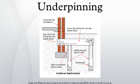Underpinning may be accomplished by extending the foundation in depth or in breadth so it either rests on a more supportive soil stratum or distributes its load across a greater area. Use of micropiles and jet grouting are common methods in underpinning. An alternative to underpinning is the strengthening of the soil by the introduction of a grout, including expanding urethane-based engineered structural resins. Underpinning may also be necessary where P-class soils in certain areas of the site are encountered.